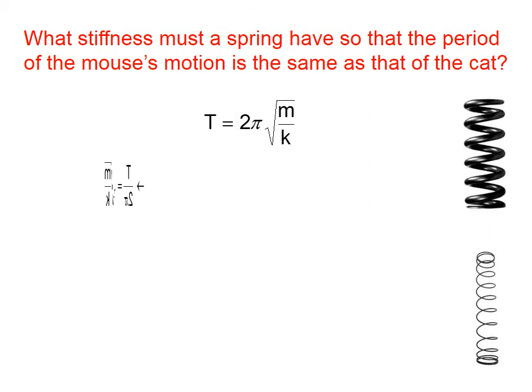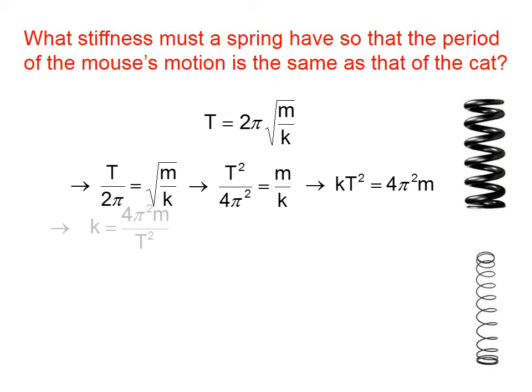So the first thing we need to do is solve this equation for the spring constant, k. I'm going to divide both sides by 2 pi. I'm going to square both sides to get rid of the square root sign. I'm going to cross multiply to get rid of any fraction. And now I'm going to get k, the spring constant, by itself, by dividing both sides by t squared, which leaves me with this expression.